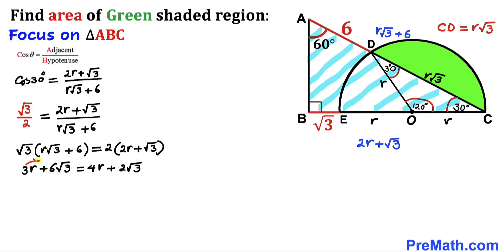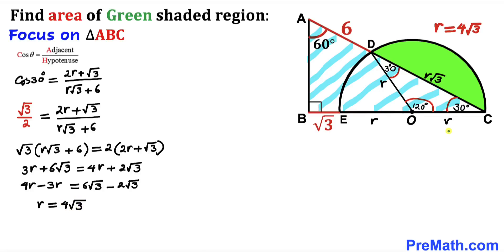Moving 3R to the other side and 2√3 to the opposite side, then simplifying: 4R − 3R = 6√3 − 2√3, giving us R = 4√3 units. So our radius R turns out to be 4√3 units.